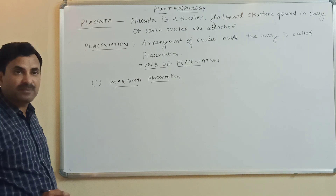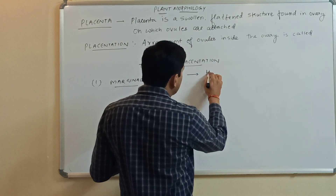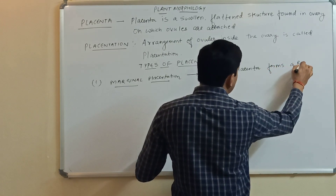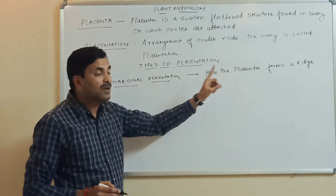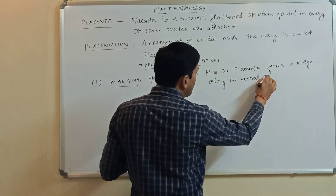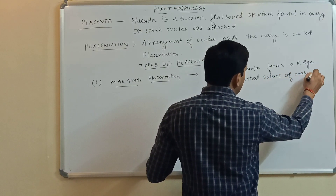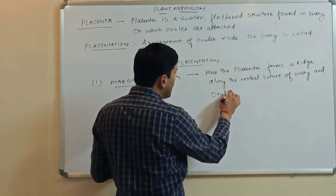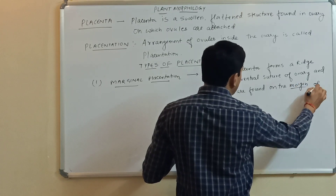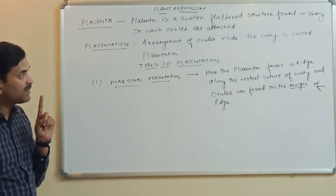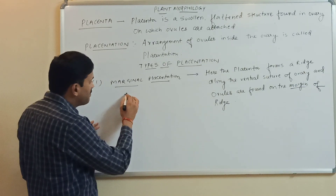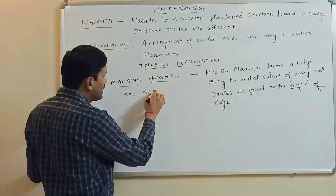What is marginal placentation? Here, the placenta forms a ridge along the ventral suture of the ovary, and the ovules are found on the margins of that ridge. The best example of marginal placentation is the Leguminosae family.